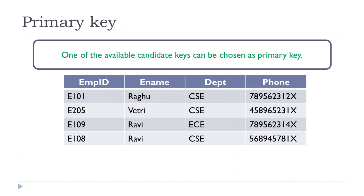The next concept is primary key. We have identified two candidate keys: employee ID, and the combination of employee name and department. A primary key is one of the candidate keys — we can choose any candidate key as the primary key when creating a table. In most cases, we choose a candidate key with a single attribute as the primary key, because it is easier to search for records. Hence, employee ID is chosen as the primary key for the employee table.